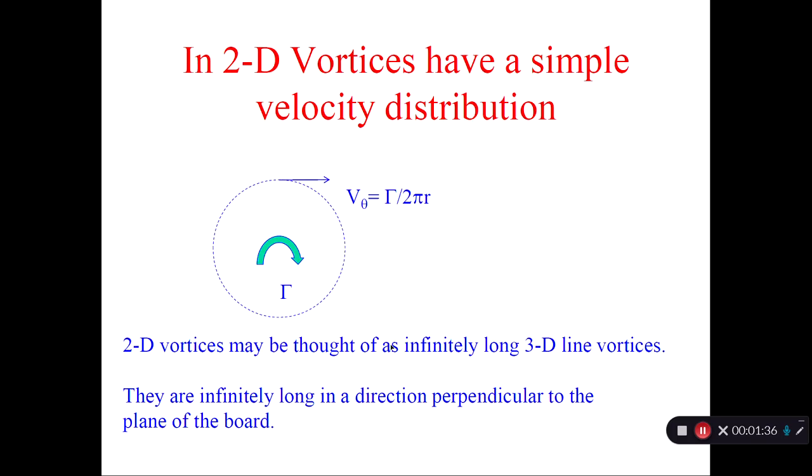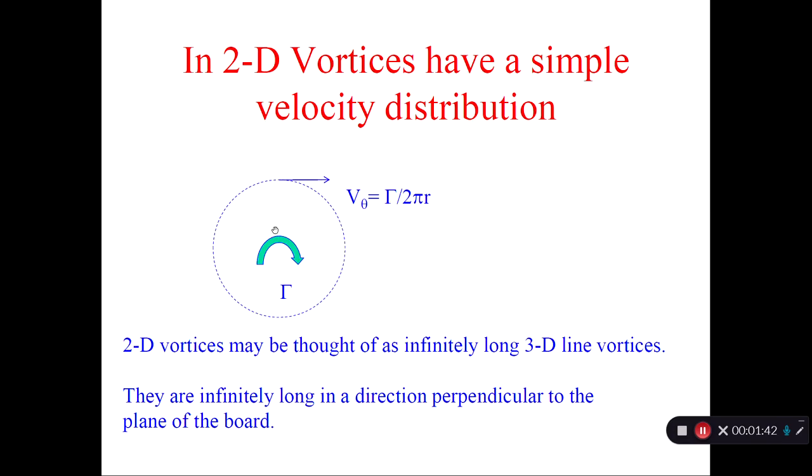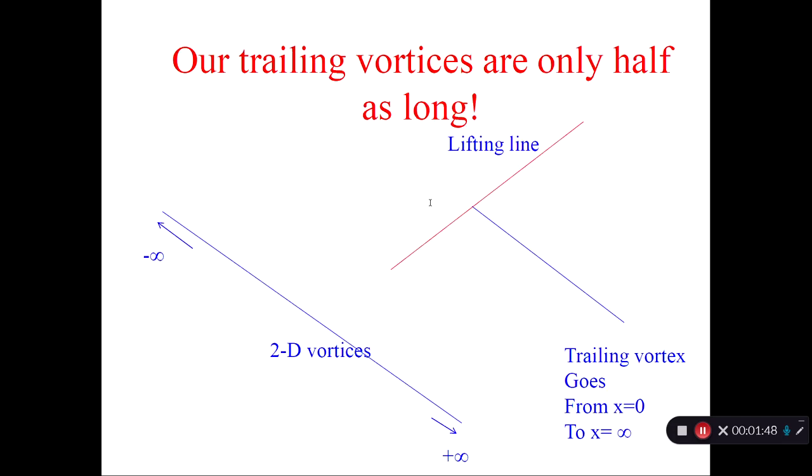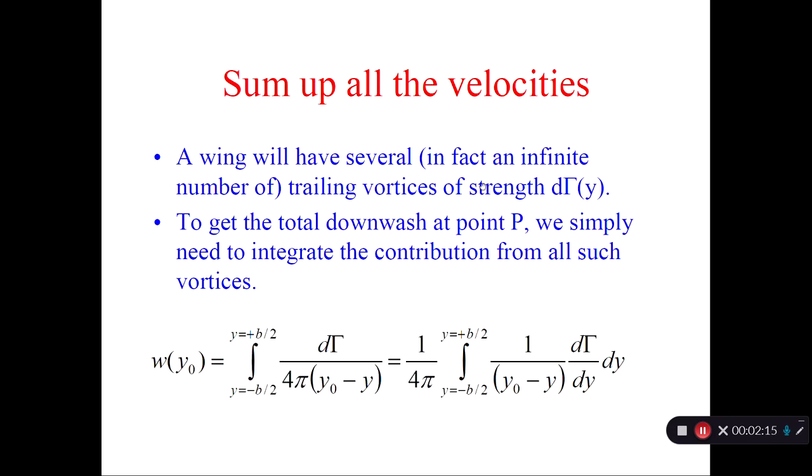So this is the model we proposed in our previous videos. Then we took a typical vortex and we said how much downwash is it going to produce at a point called P. In 2D it's gamma over 2π times distance. In 3D, because our vortex is only half as long, instead of 2π, we have to use 4π times distance. So vortex is at one point we call y, the P is at y0. The distance will be y minus y0 or y0 minus y, depending on where the origin is located. Important thing is this will be a physical distance. Now integrating this over all such vortices gives the downwash.